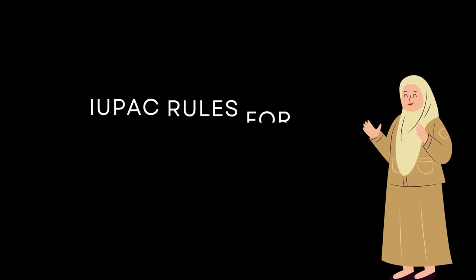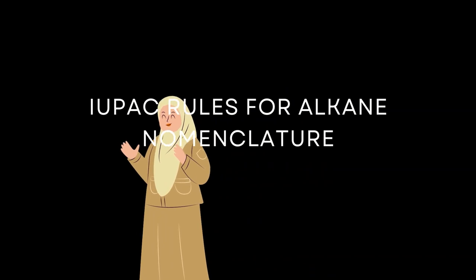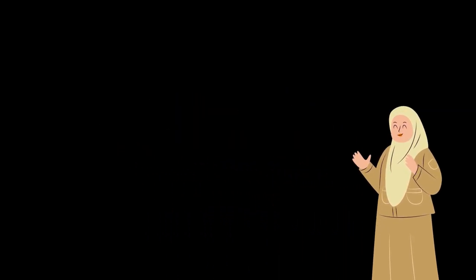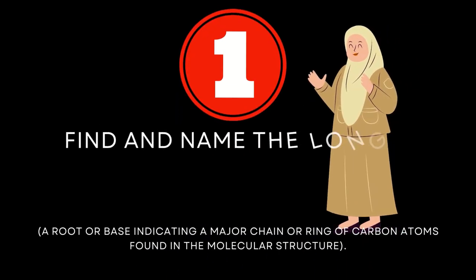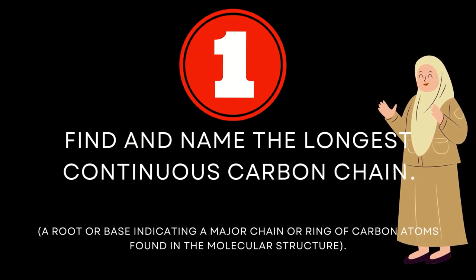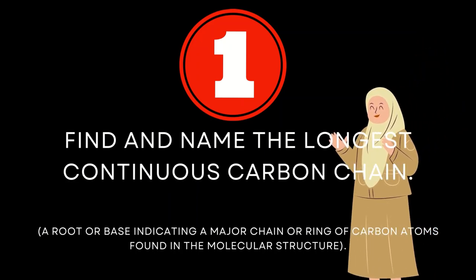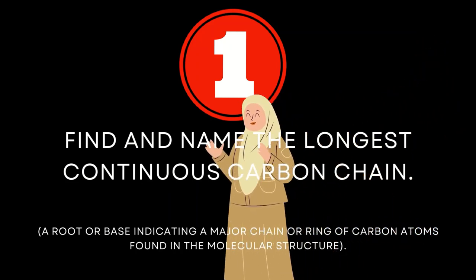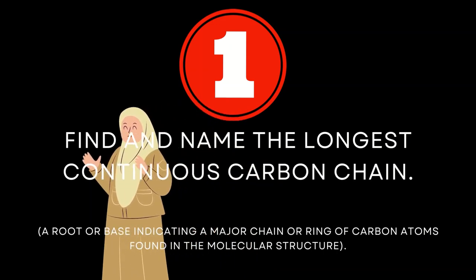IUPAC rules for simple hydrocarbons — alkanes. Rule number one: find and name the longest continuous carbon chain. Remember, a root or base indicates the major chain or ring of carbon atoms found in the molecular structure.